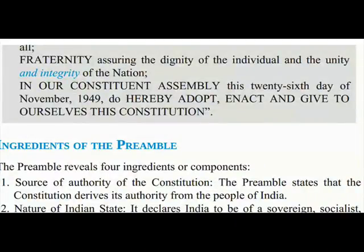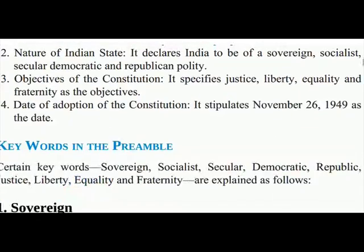Ingredients of the Preamble. The preamble reveals four ingredients or components. 1. Source of authority of the Constitution: the preamble states that the Constitution derives its authority from the people of India. 2. Nature of Indian state: it declares India to be a sovereign, socialist, secular, democratic and republican polity. 3. Objectives of the Constitution: it specifies justice, liberty, equality and fraternity as the objectives. 4. Date of adoption of the Constitution: it stipulates November 26th, 1949 as the date.